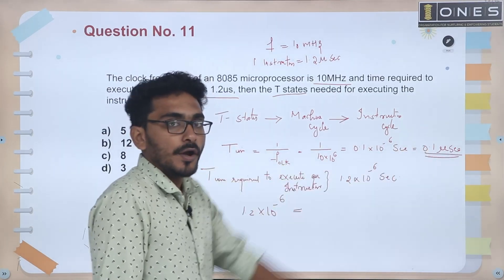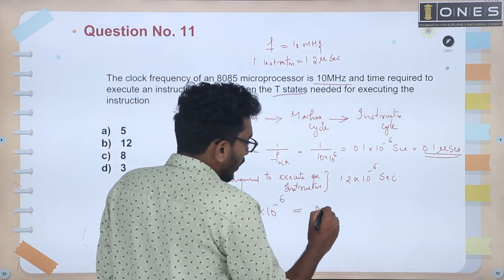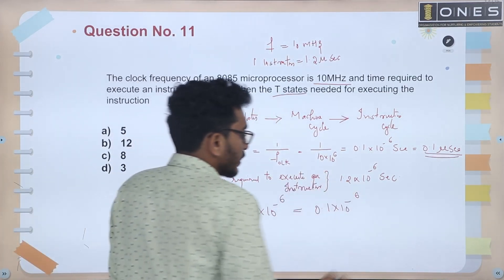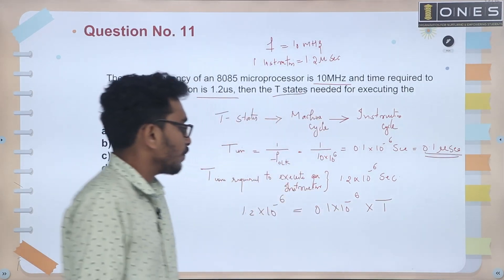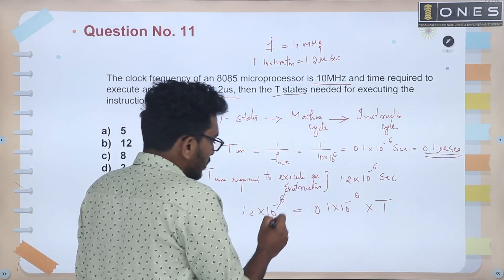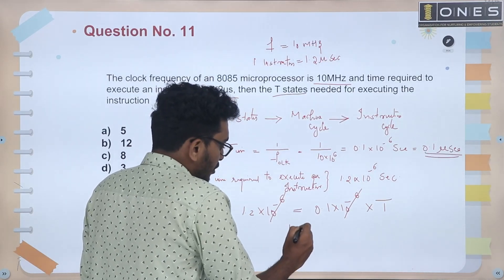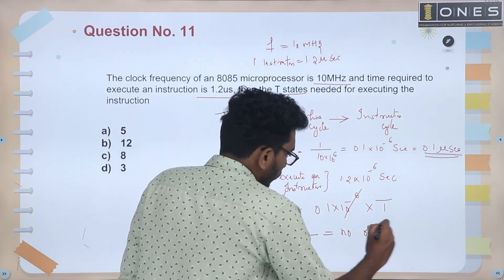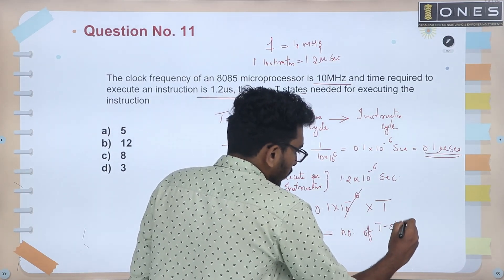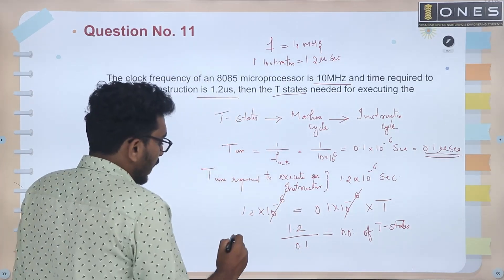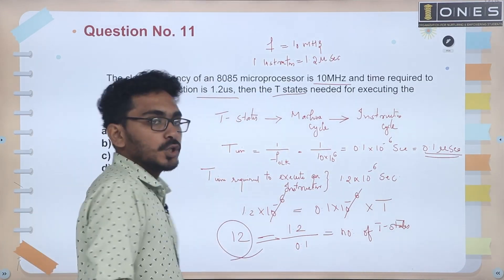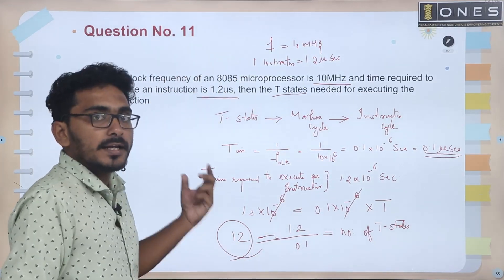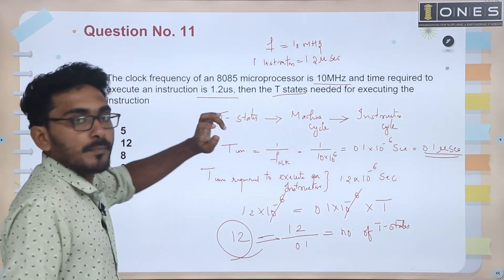Number of T-states = 1.2 divided by 0.1 microseconds = 12. So 12 T-states are required for executing an instruction whose instruction time is 1.2 microseconds.